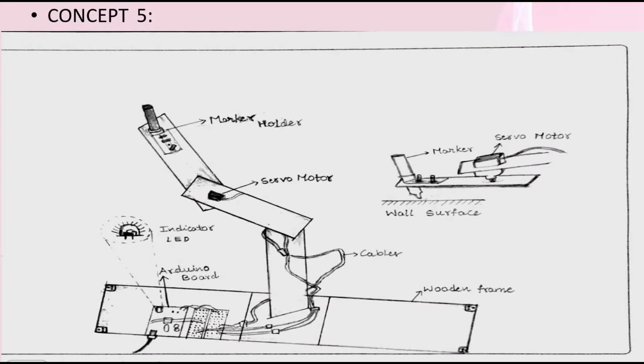Concept 5: This consists of wooden frame, Arduino board, servo motor, cables, LED, and screw type marker holder. Servo motor is used for the movement of marker.